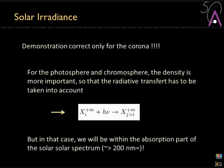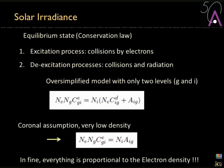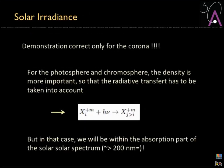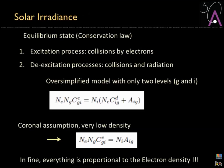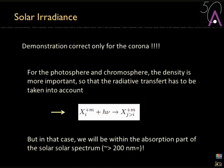This derivation is only correct for the corona, because we assumed very low density to simplify. If you go to the photosphere and chromosphere, the density is higher and you have to take radiative transfer into account. In that case, the ion can also be excited by absorbing emission, and the equation becomes more complex — adding a term corresponding to the absorption part of the solar spectrum, roughly above 200 nanometers.